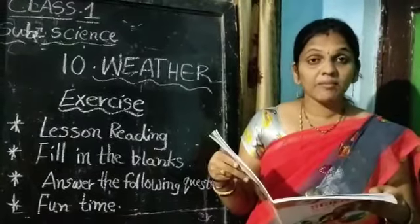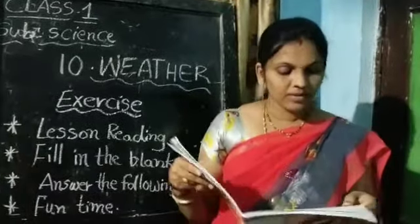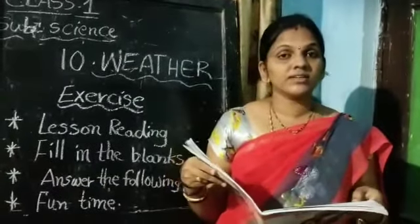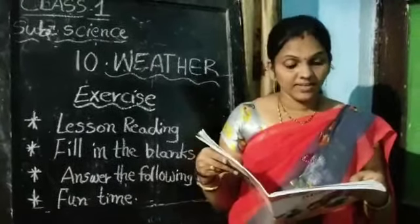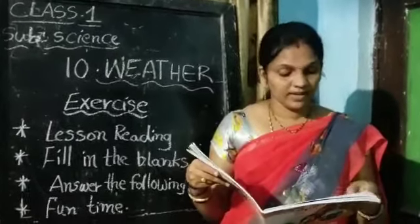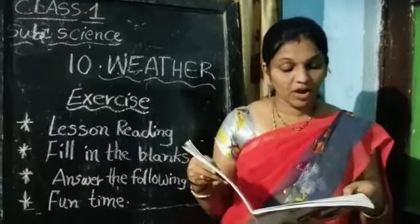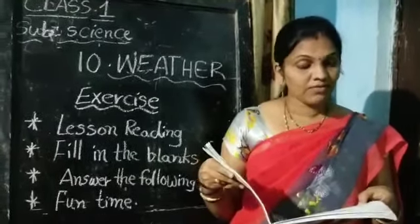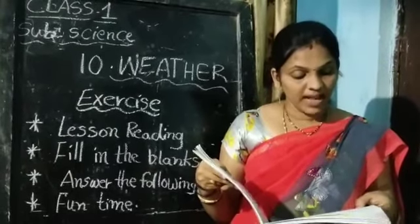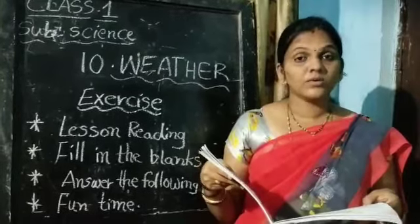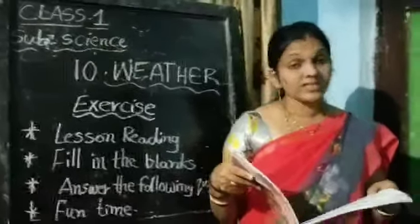There are three main seasons in our country. First one: summer season. When the day is clear, the sun shines brightly — we call it sunny weather. We feel very hot on sunny days. We feel uneasy on hot days. We wear light cotton clothes. We like to drink cool drinks on such days.